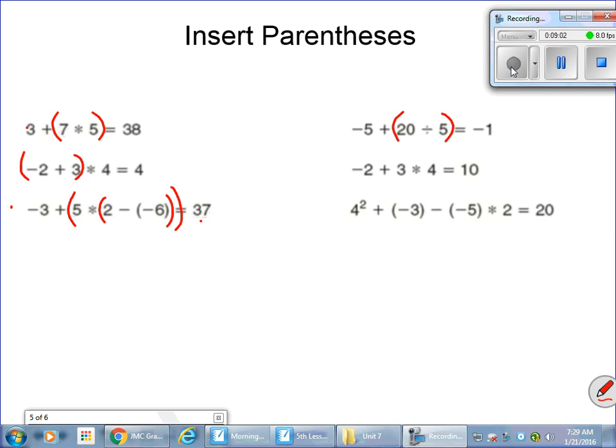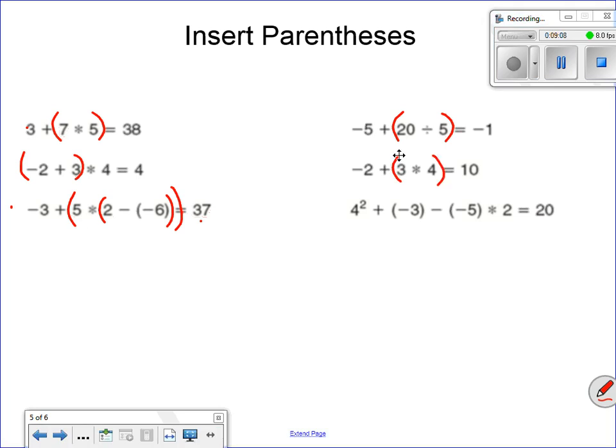This next problem, I have to get to a 10. I have a negative 2, a 3, and a 4. So to get to a 10, I have to get to a pretty big number. What if I did 3 times 4 and got 12? 12 plus this negative 2 would give me a positive 10.